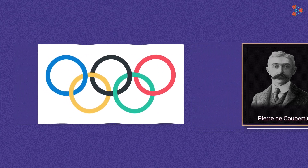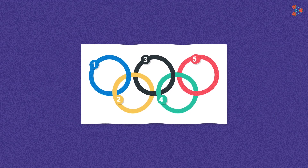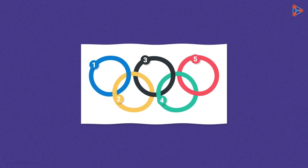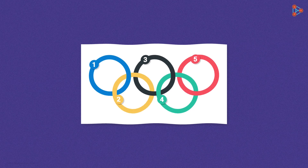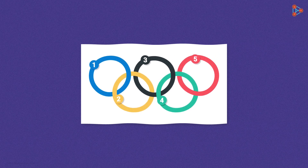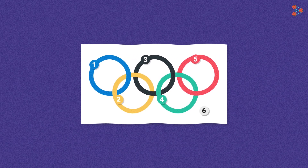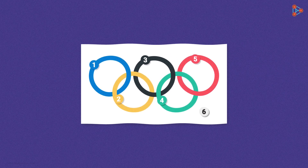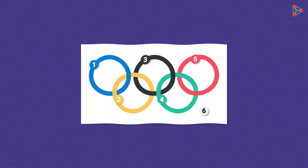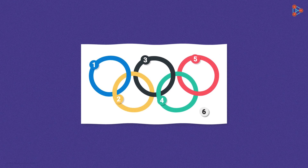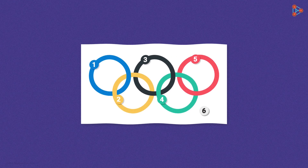Do we have only five colours in consideration here? No — one important thing many of us wouldn't have noticed is that there are six colours in the flag, including white, which is the background. So why these six colours? The six colours were chosen from the flags of the participating countries of that era.